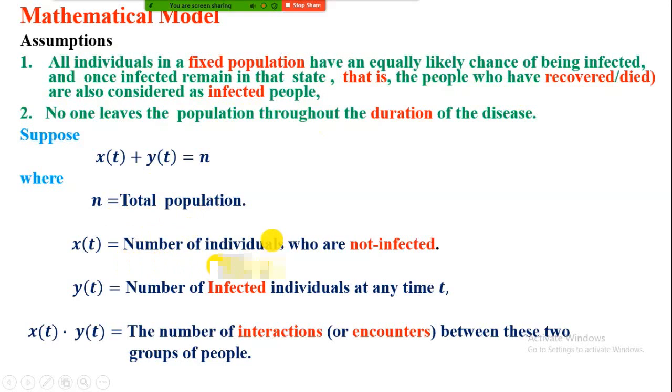x is the number of individuals who are not infected, y is the number of infected individuals at any time t, and the multiplication of x and y is the number of interactions or encounters between infected and non-infected people.